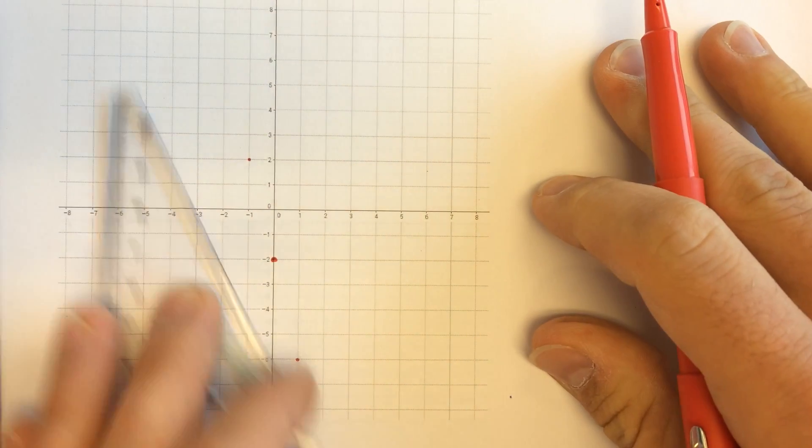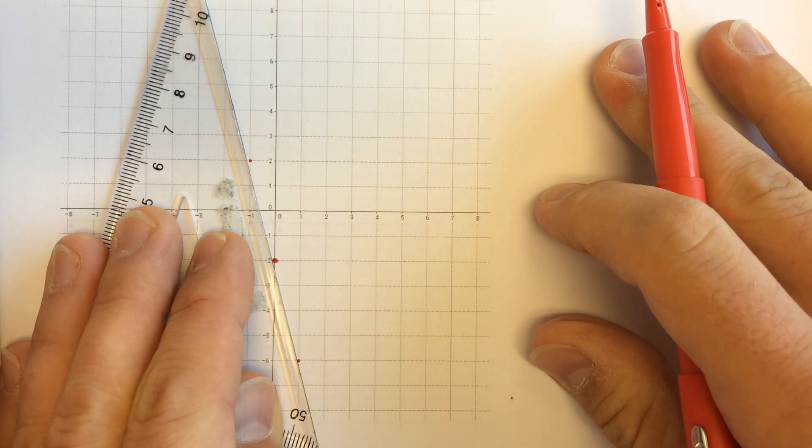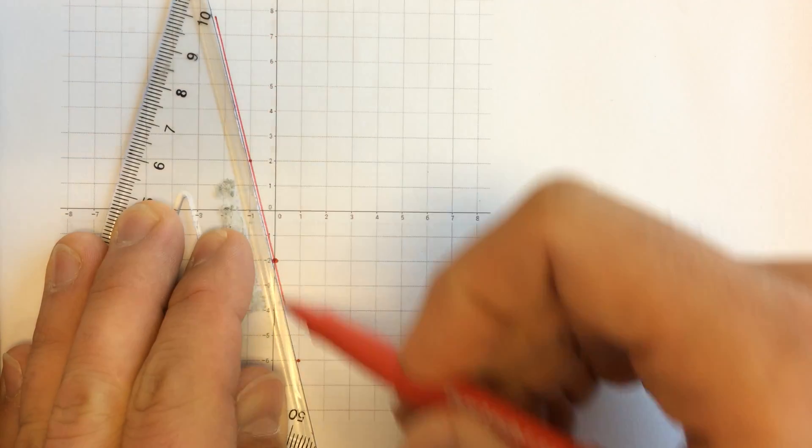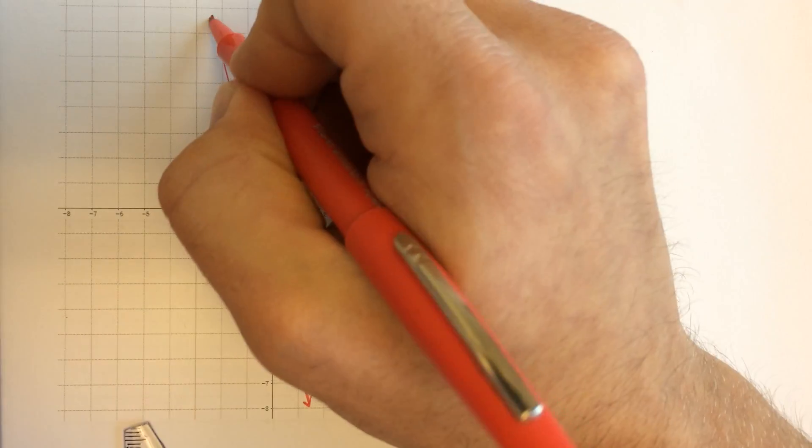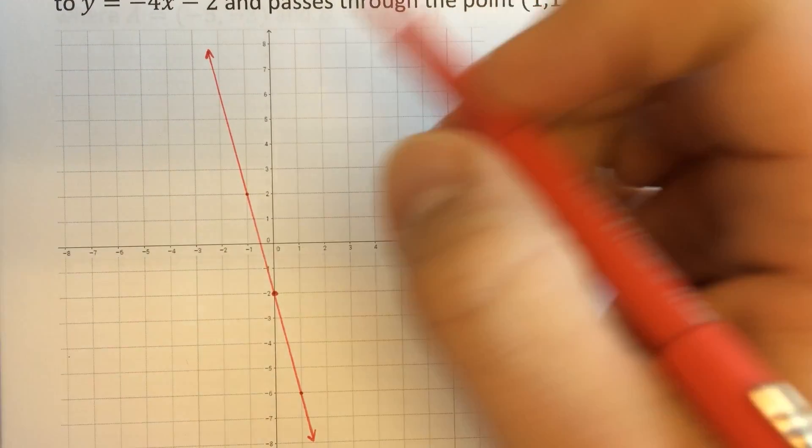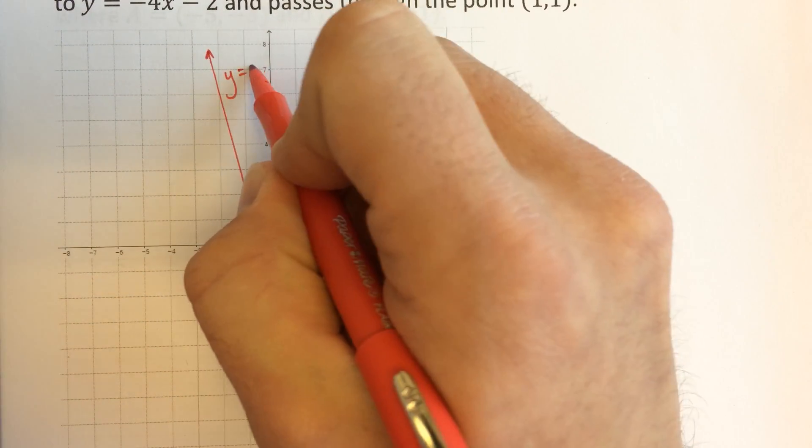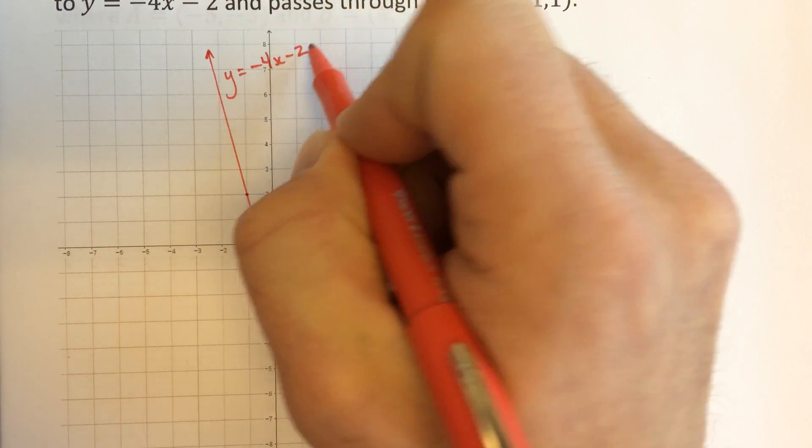If we go left, then we go up, and I'll connect those. So that's our original line that we're referencing, negative 4x minus 2.